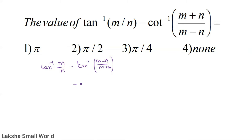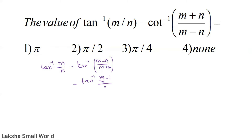Rearranging, we get tan⁻¹ of (m/n) minus tan⁻¹ of (m−n)/(m+n). Using the subtraction formula: numerator is m/n − 1, denominator is 1 + m/n.